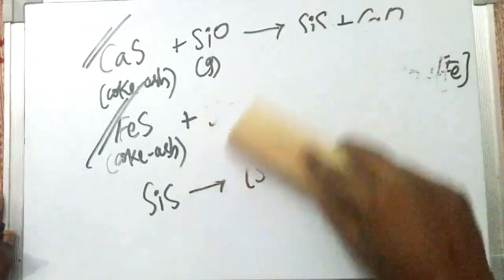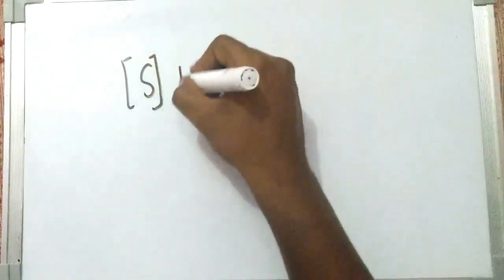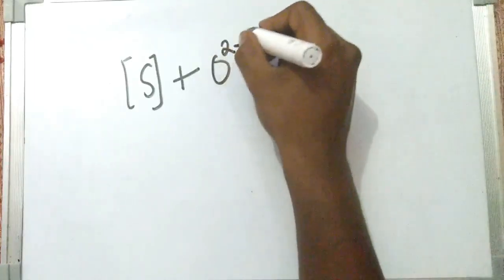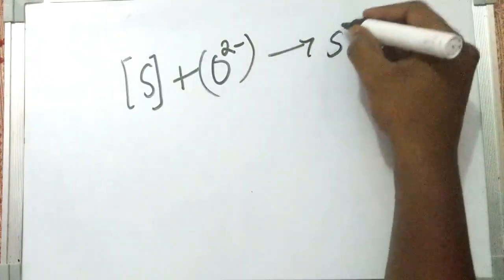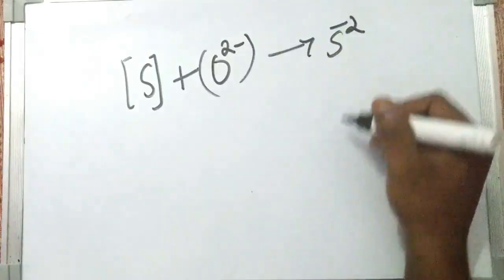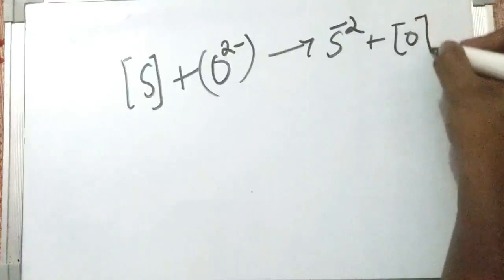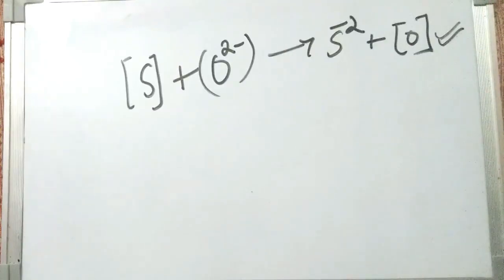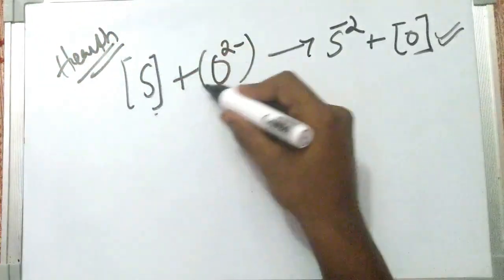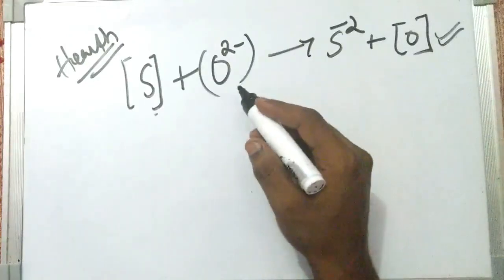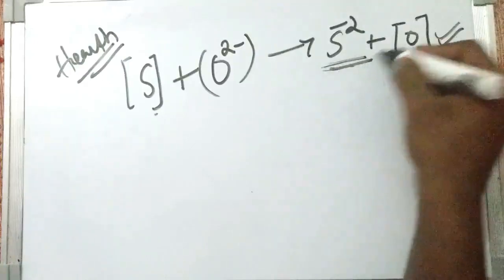In the hearth, slag-metal reactions take place. The dissolved sulfur in the metal reacts with the oxides present in the slag. The dissolved sulfur is reduced by these oxides, forming S²⁻ ions in the slag while increasing the dissolved oxygen content in the metal. This is the slag-metal reaction of sulfur in the hearth region.